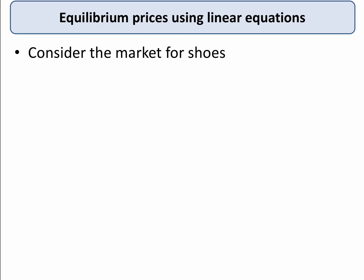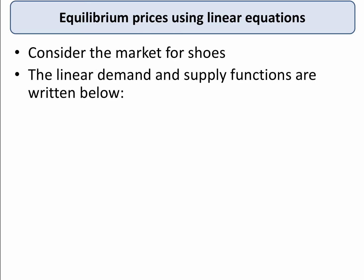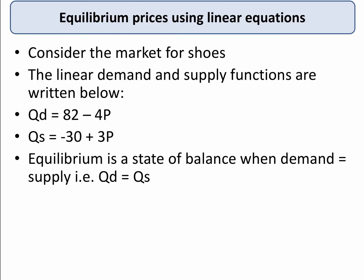So consider the market for shoes — take any kind of market really — and we can write down two linear demand and supply functions. If you followed my previous two videos, this hopefully should be fairly familiar to you. So let the quantity demanded, Qd, be 82 minus 4p, and let the quantity supplied from shoe producers be minus 30 plus 3p. So you have two equations, demand and supply, and of course equilibrium in the market is defined as a state of balance where the quantity demanded and the quantity supplied are equal in the market.